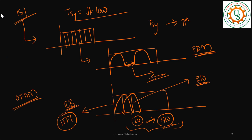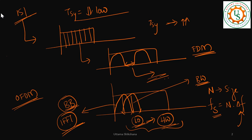We can implement the equivalent operation in the baseband using IFFT. When we decided this, we needed to determine several parameters: the value N — the IFFT size; the sampling rate, which equals N times Δf (where Δf is the sub-band spacing); and the sub-carrier frequency fk = k·Δf.